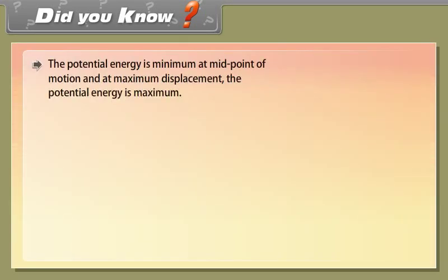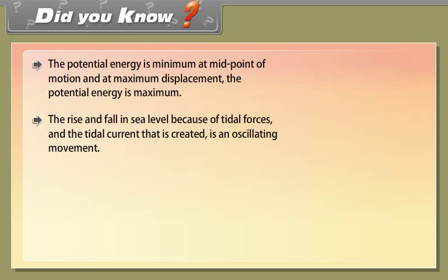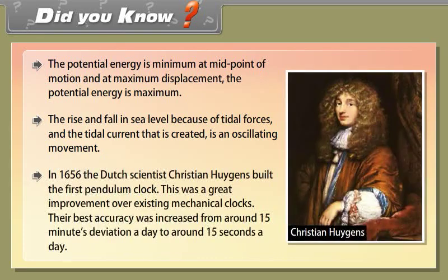Did you know? The potential energy is minimum at the midpoint of motion and maximum at maximum displacement. The rise and fall in sea level is due to tidal forces, and the tidal current created is an oscillating motion. In 1656, the Dutch scientist Christiaan Huygens built the first pendulum clock, greatly improving accuracy from about 15 minutes deviation per day to around 15 seconds per day.